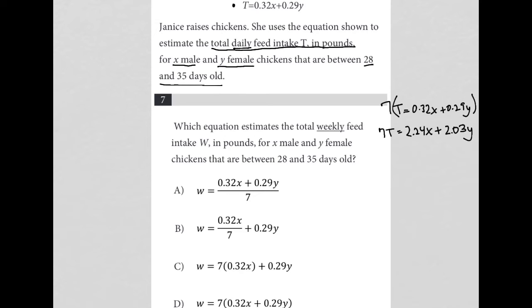This represents seven days. Seven days is a full week. Now we know that weekly feed is W, so I'm going to assume that W equals 7T.